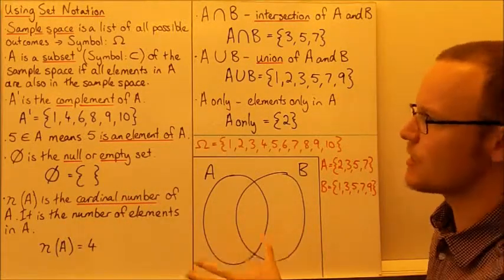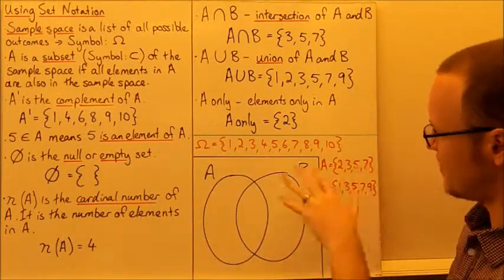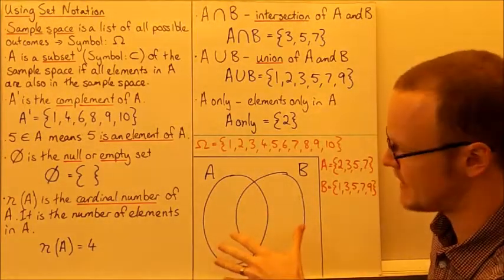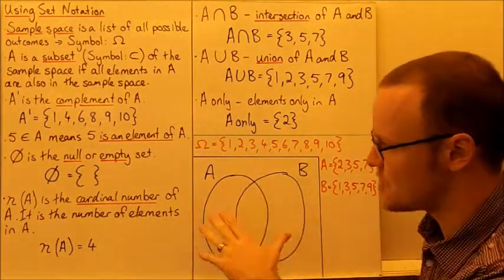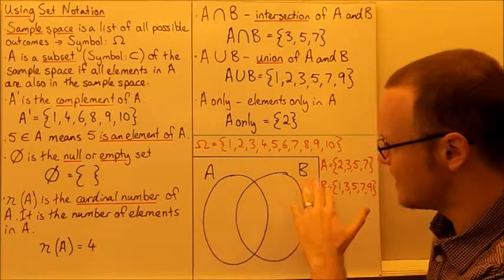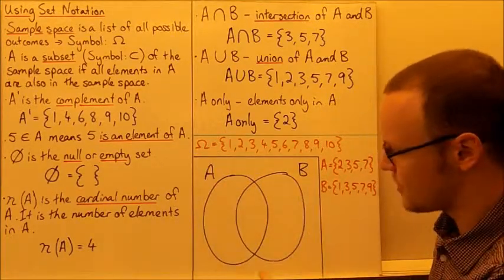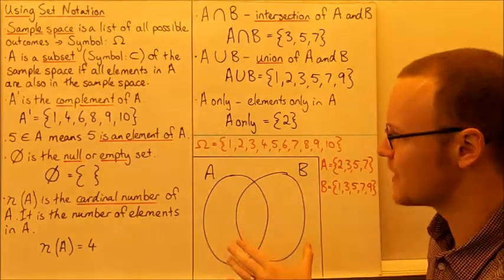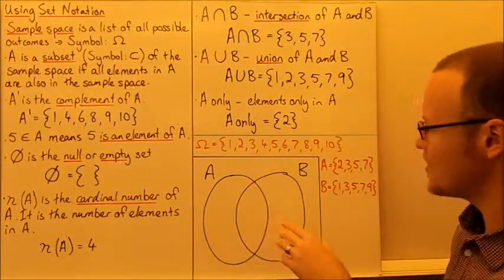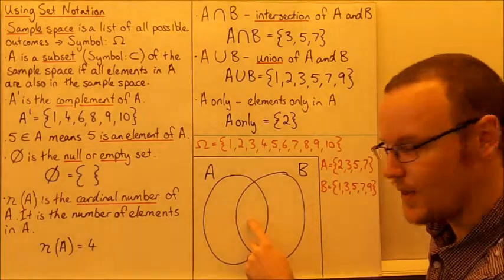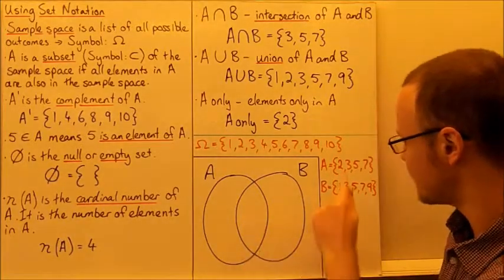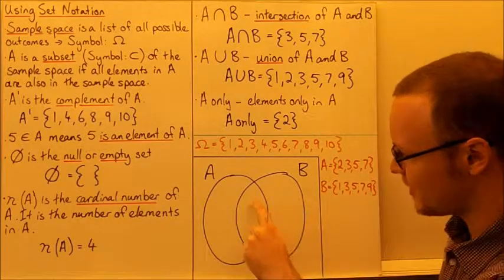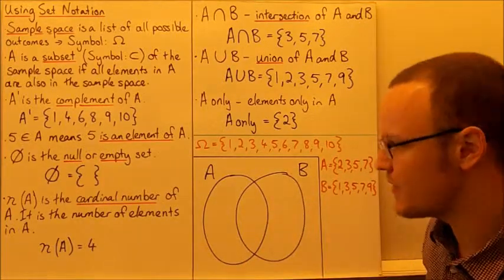What we can do with all of this information is construct a Venn diagram. The Venn diagram has set A, set B, and the whole box around the outside contains all of the values in the sample space. The values that are in both A and B go in the middle — those are 3, 5, and 7.